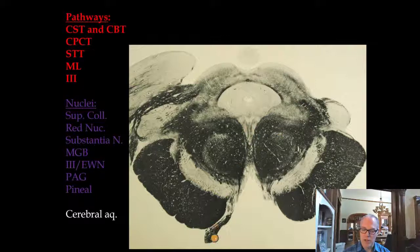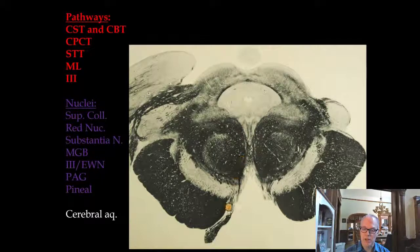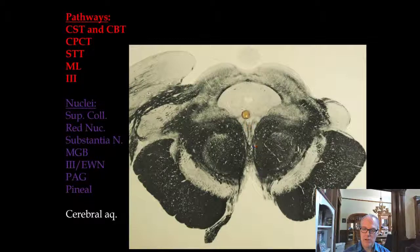Here is the third nerve exiting in the interpeduncular fossa. The third nerve has two contributions: the oculomotor nucleus is a bit lateral, while the Edinger-Westphal nucleus, which supplies parasympathetic fibers to constrict the pupil, is midline. A third nerve palsy produces eyes down and out, severe ptosis, and mydriasis.